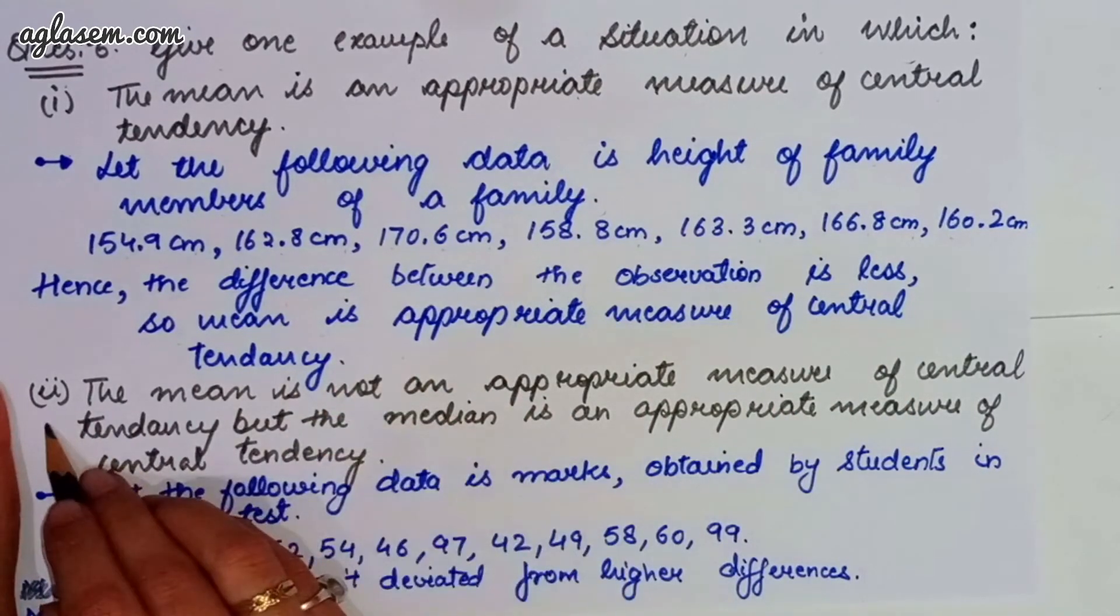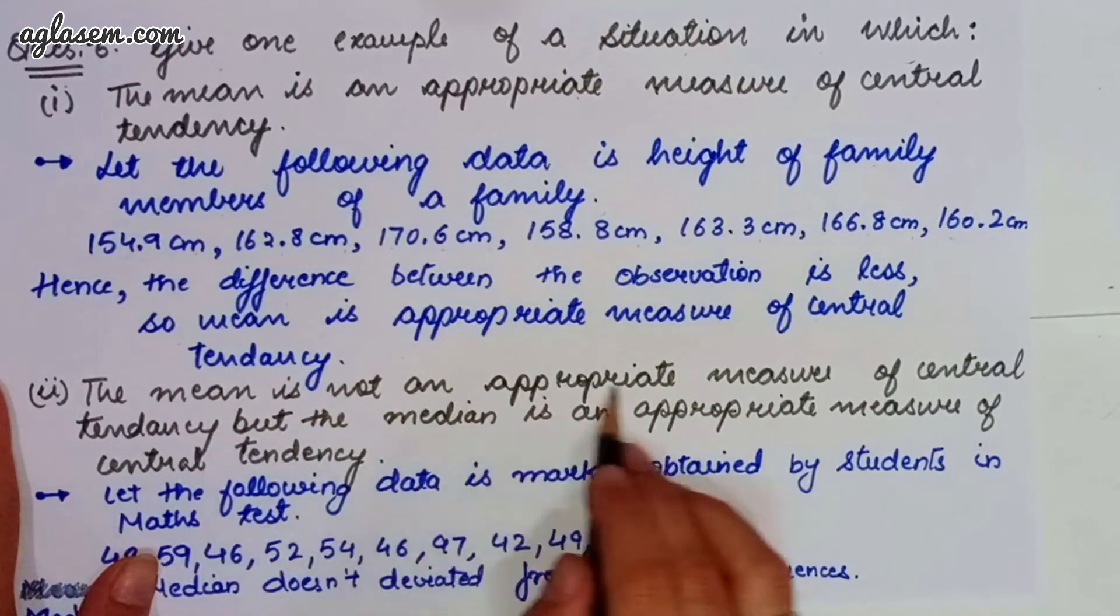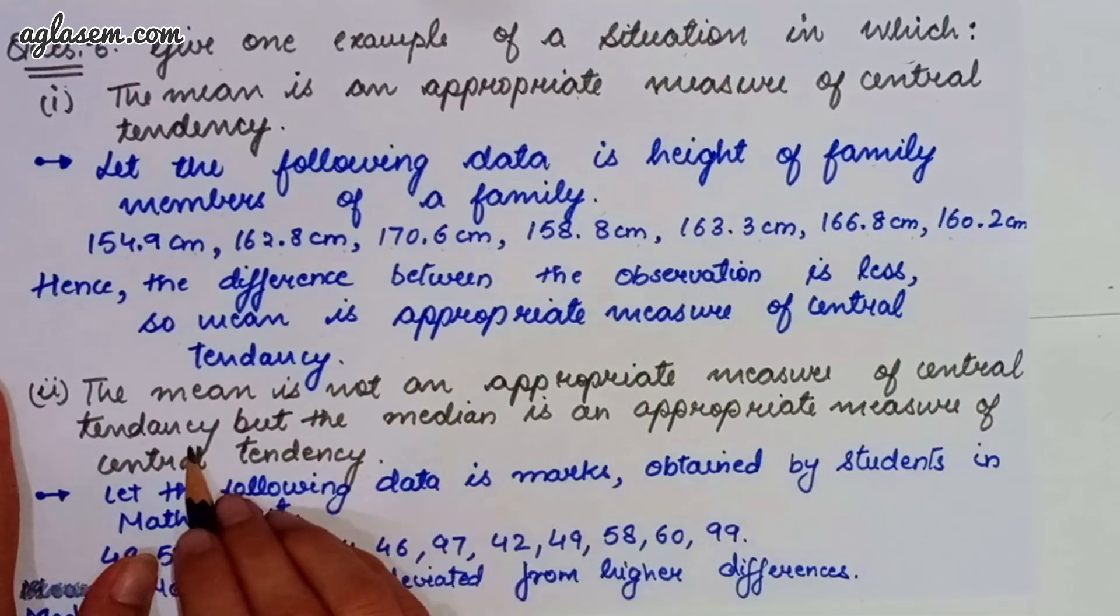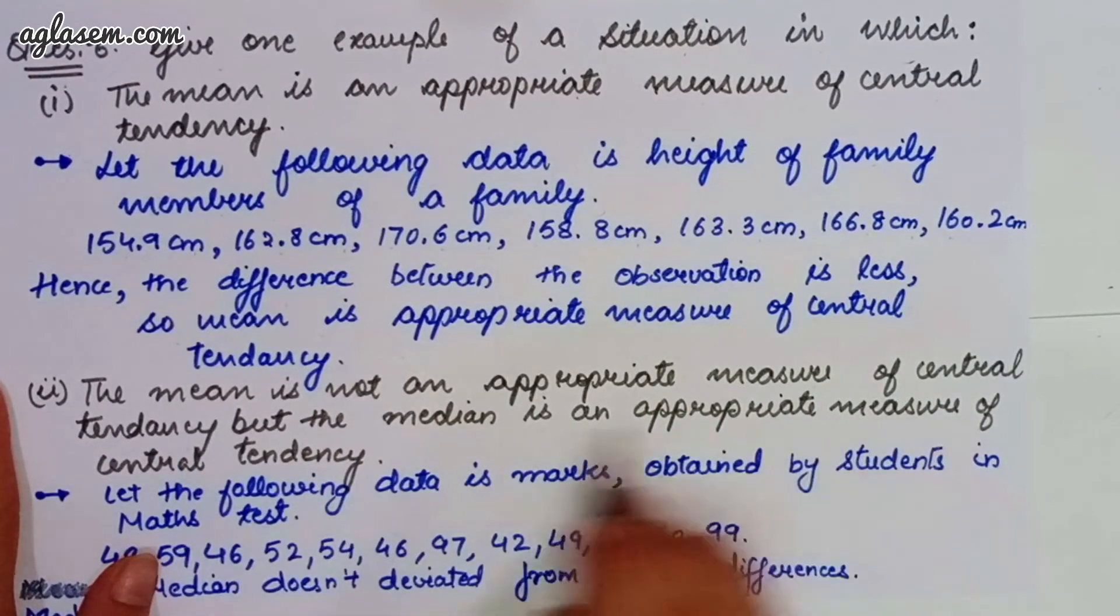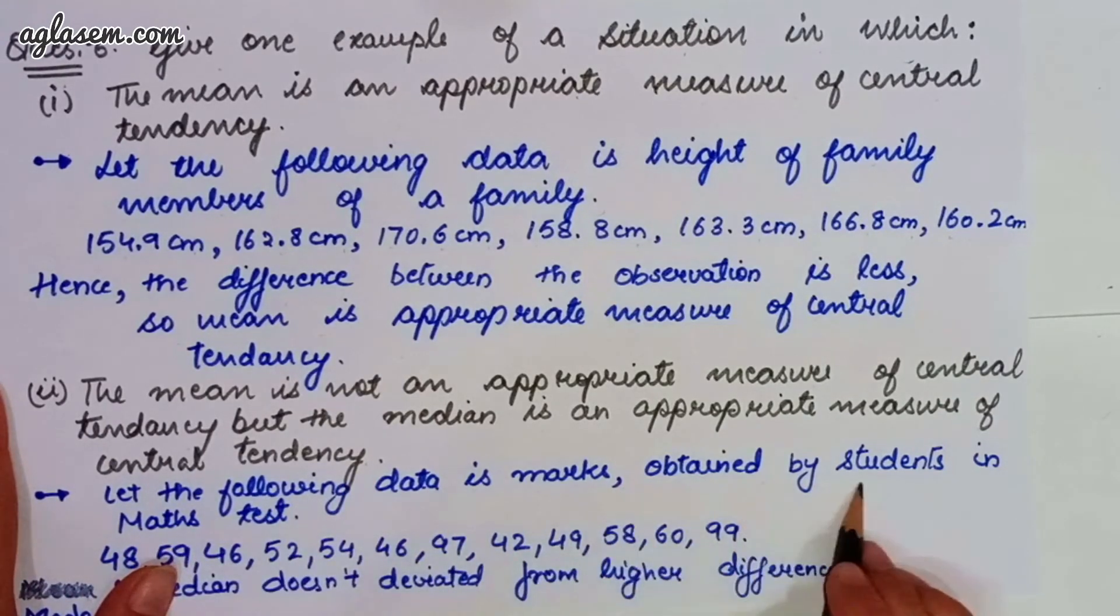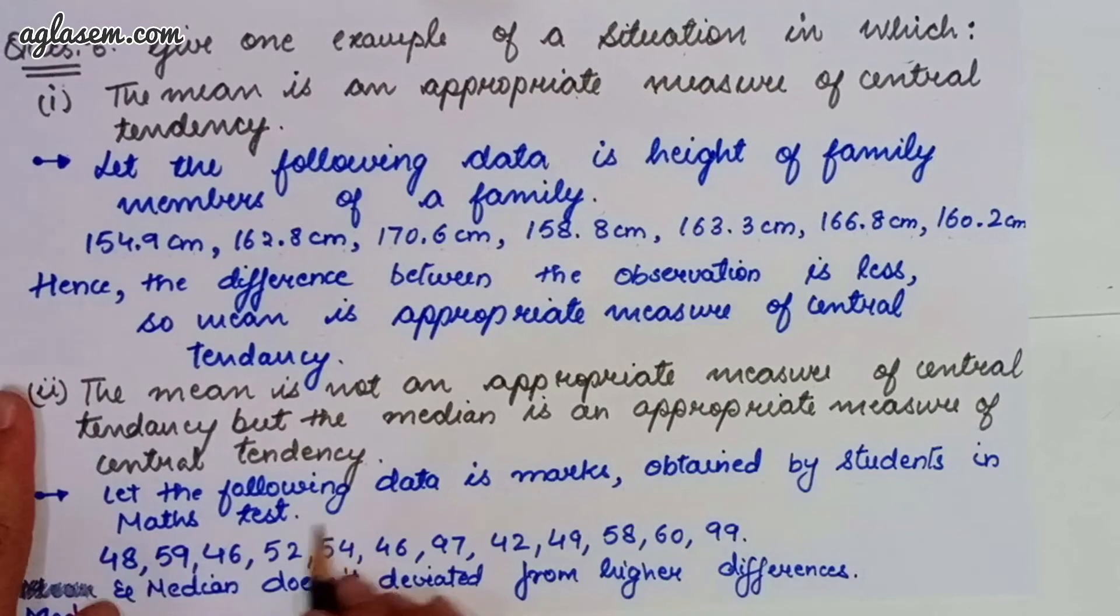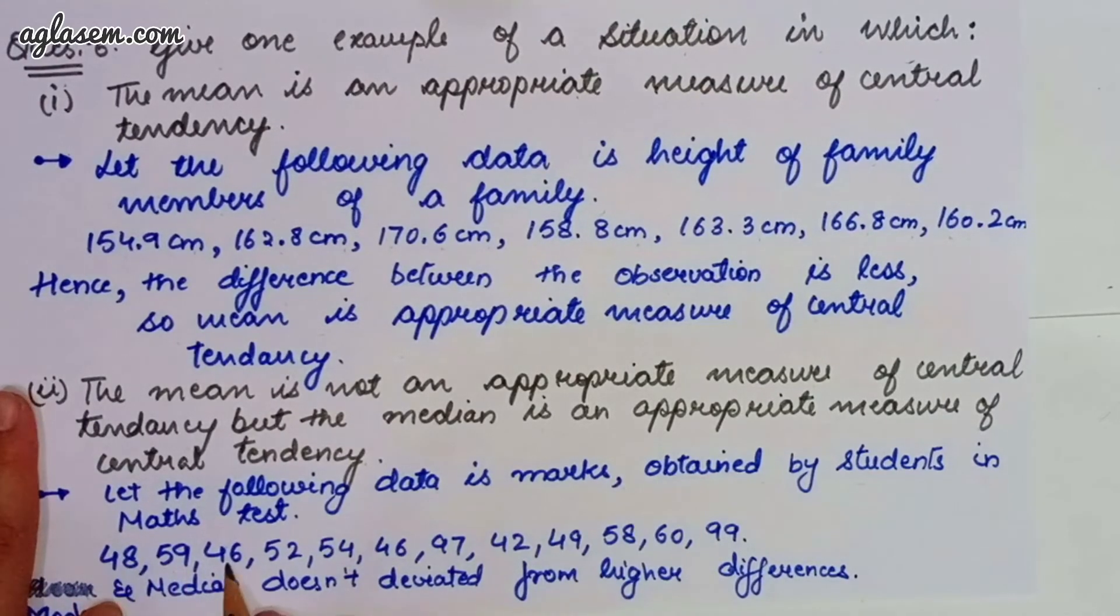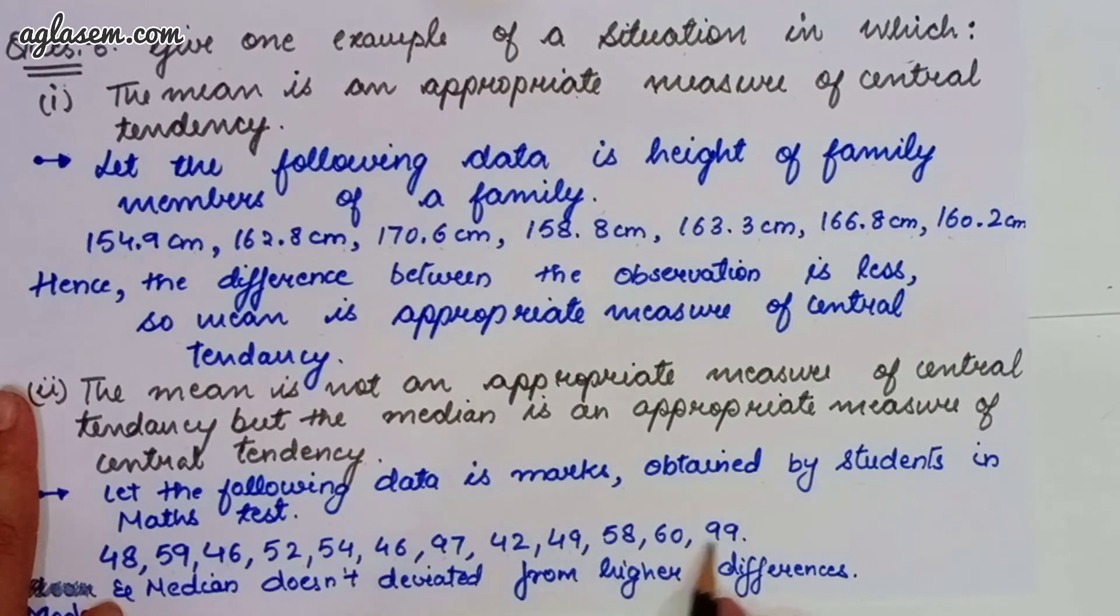Moving to our second part, which says, the mean is not an appropriate measure of central tendency, but the median is an appropriate measure of central tendency. So, the answer is, we have to let the following data is marks obtained by the students in maths test, i.e., 48, 59, 46, 52, 54, 60, 46, 69, 42, 49, 58, 60, 99. So, the mode in the median does not deviate from the higher differences.